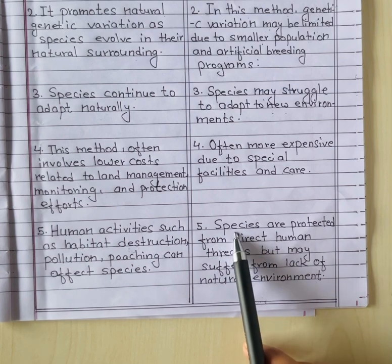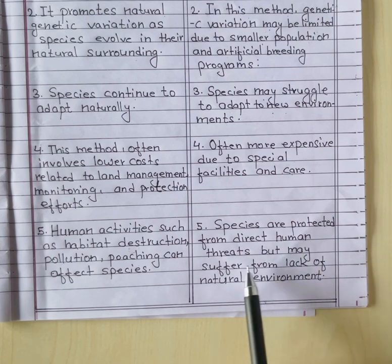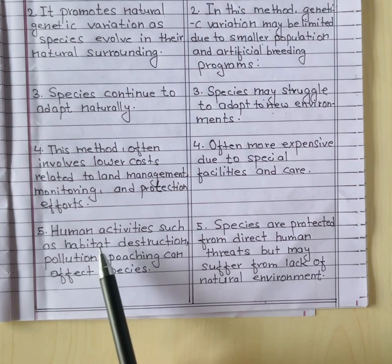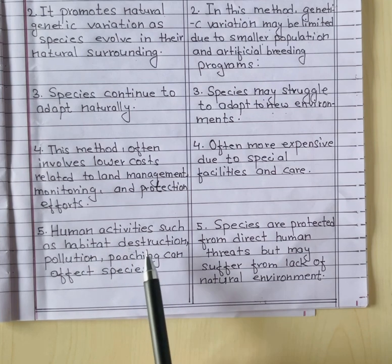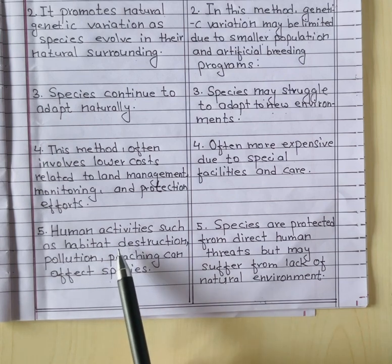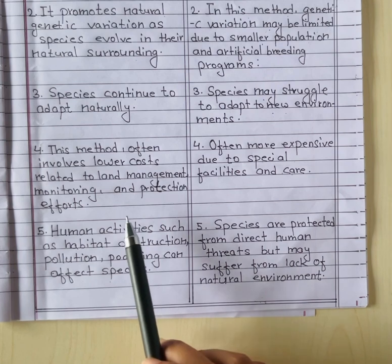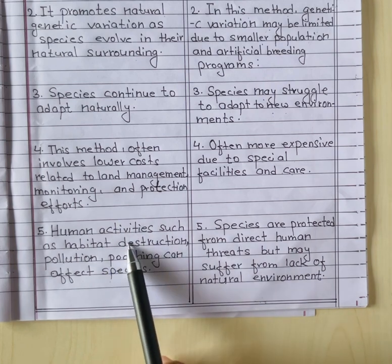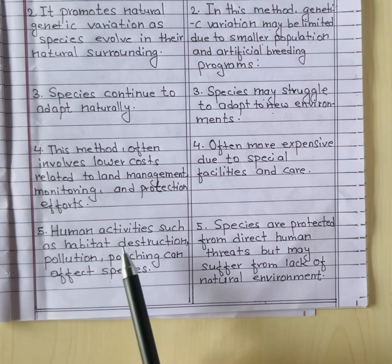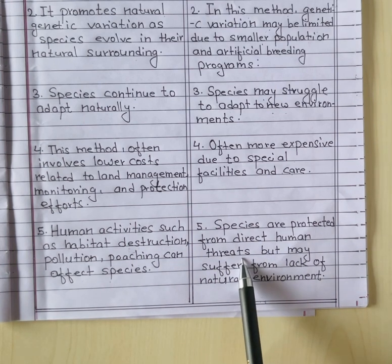In ex-situ conservation, species are protected from different human threats but may suffer from a lack of natural environment. In in-situ conservation, species are affected by human activities such as habitat loss, pollution, and poaching.